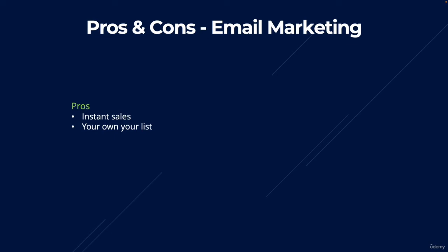If you're using Google Ads, Google could ban your account. With SEO, Google could remove your website from search results. But when you own your email list, no one can take that away from you. Even if your email software like Mailchimp bans you, you can take your list and send from another platform. Another benefit is that email marketing has one of the best conversion rates, because everyone on your list has already subscribed and trusts you. You can also automate the process — create one email template and the software sends it to everyone automatically.